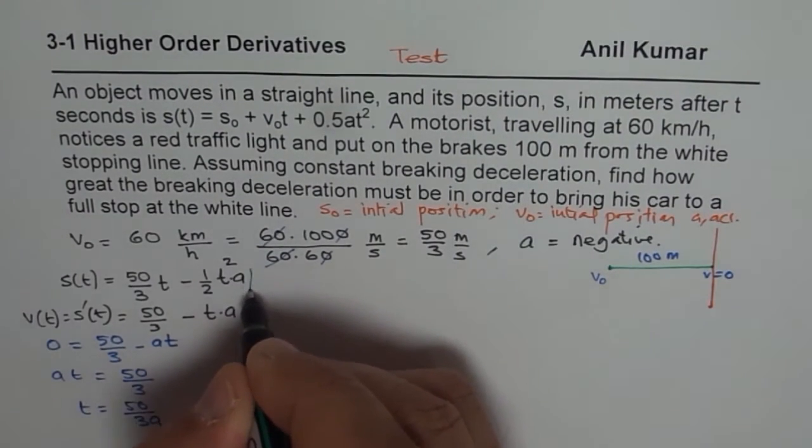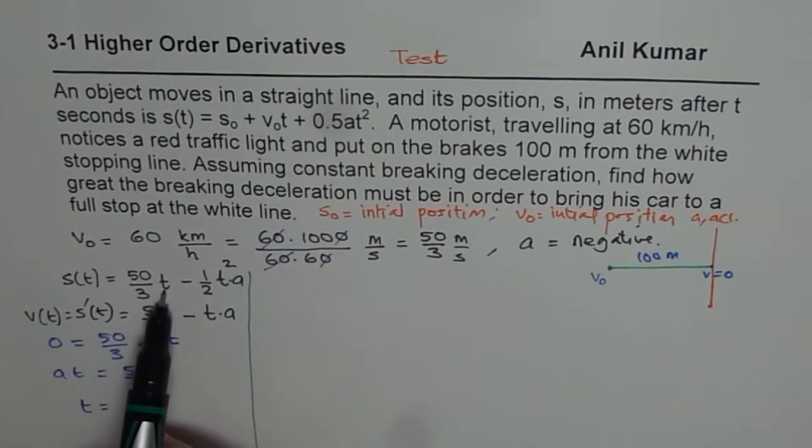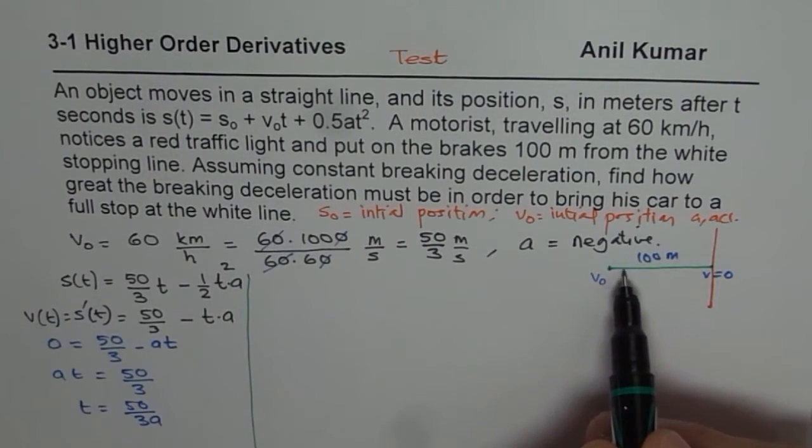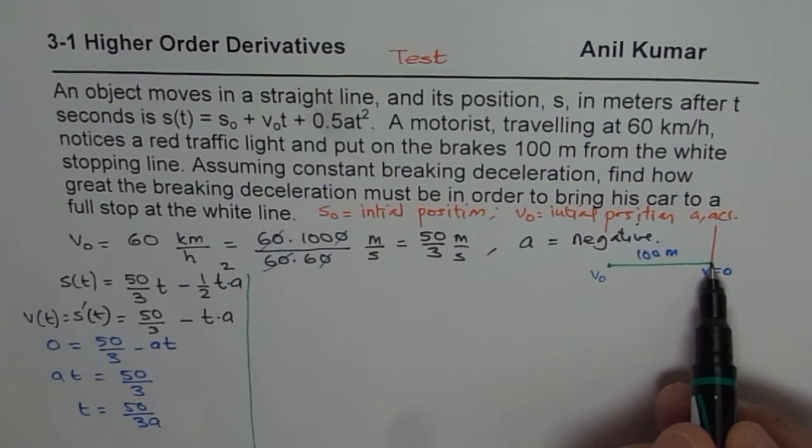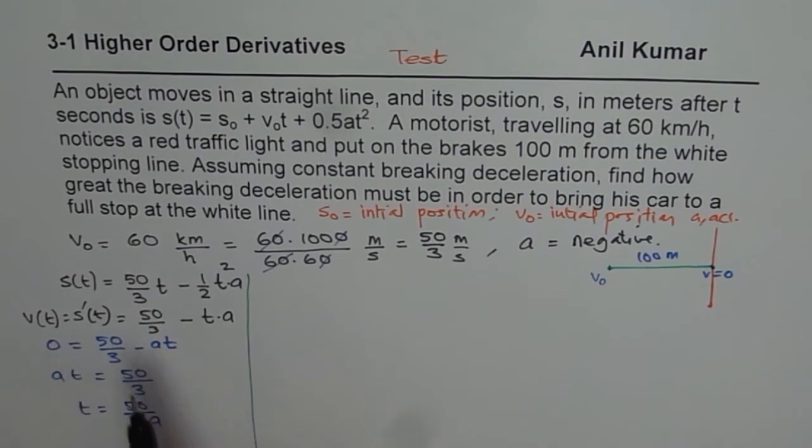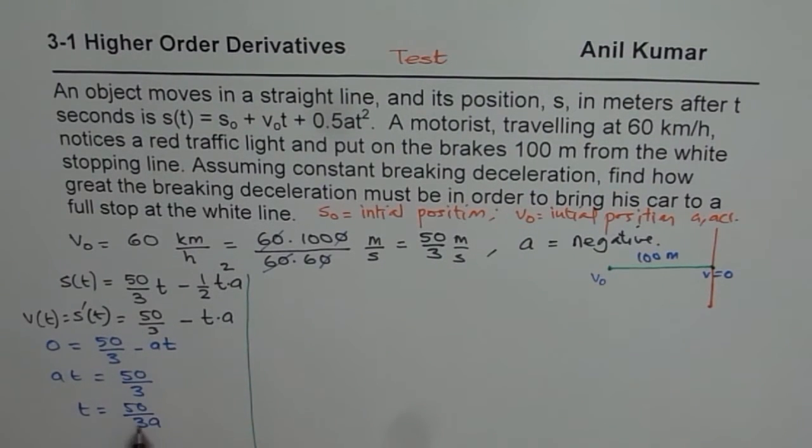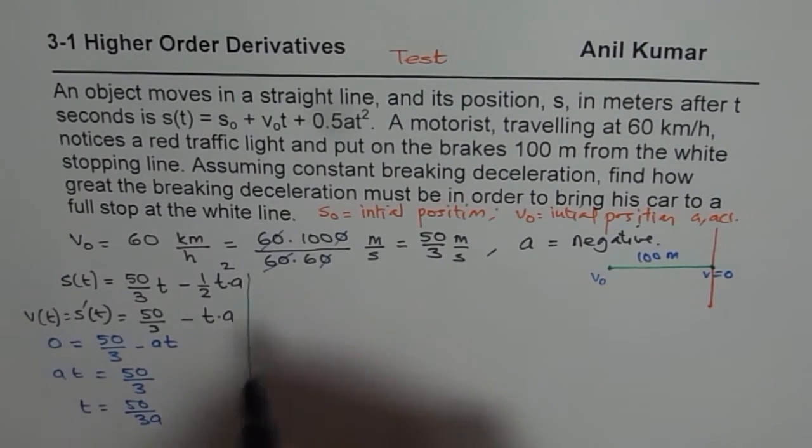So that becomes the time for us. Now what we can do here is, and that is a tricky part, we know time. So we will substitute time here in our first equation. We know the distance, s(t), it is total distance of 100 meters, which is being covered. So equating 100 meters for s(t), we can find the value of acceleration.